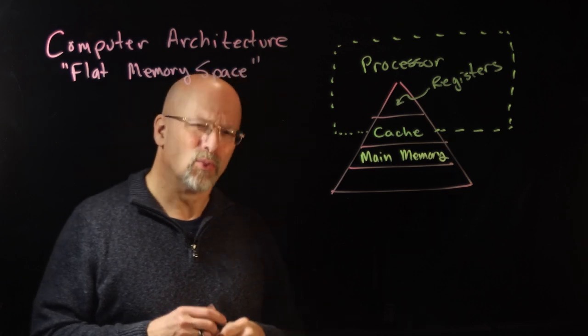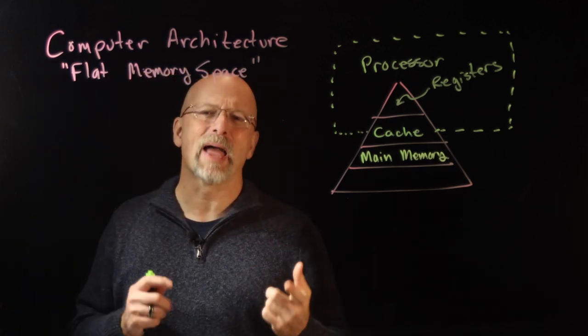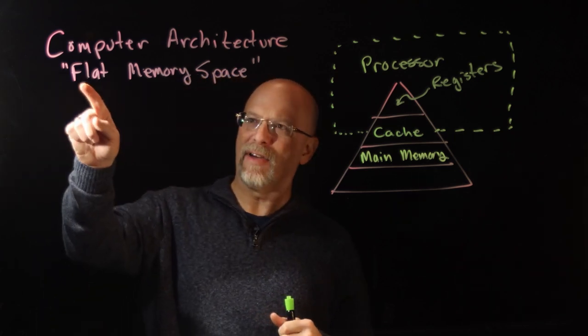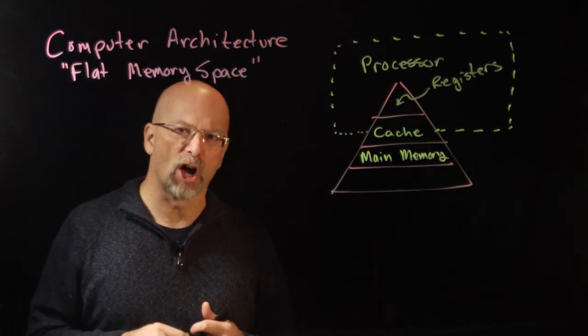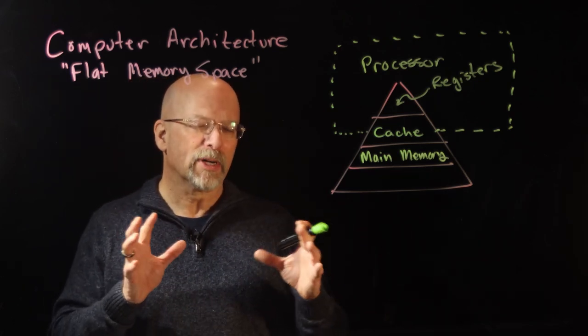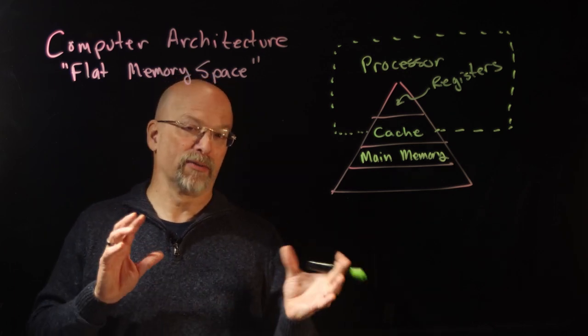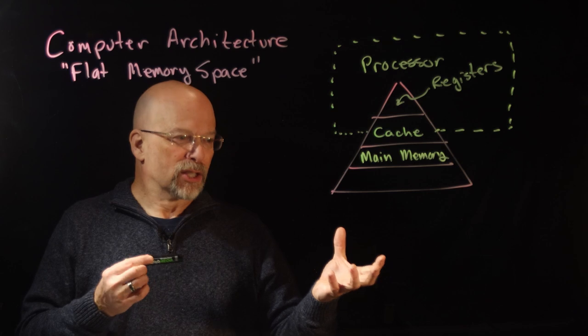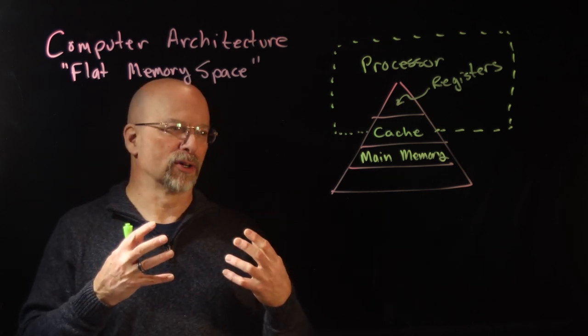Sitting outside the cache you have main memory. Sometimes people call this RAM. RAM is not really the correct term for it because RAM actually means random access memory, and it has a lot to do with this idea of a flat memory space. That's where you're storing all the active processes we're currently working on.